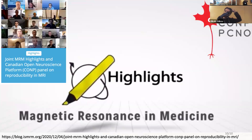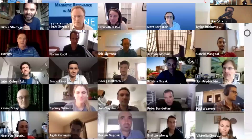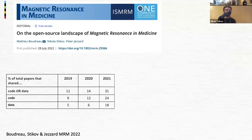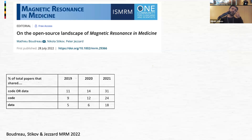This editorial got a lot of attention — it was a collaboration between different institutions, involving Peter Bandettini, Peter Jezzard, and Matt Bernstein. Three years later, when we looked at the number of papers that shared code or data in 2019, 2020, and 2021, the trend was obvious: people started sharing more data and code. We convinced people that sharing things is to the benefit of everybody, including the reviewers and the people reading your manuscript.